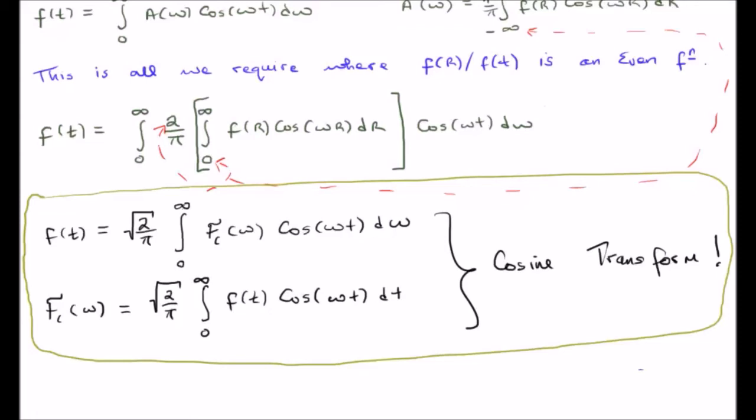It's also important to note what I've done with the scaling term, the two over pi. Because we're dealing with a Fourier transform pair, I can put this scaling term anywhere I want or even anything that gives me the ratio which would give me that scaling term. So I could put the entire two over pi on the forward transform, the reverse transform or I could split it up. Here I have split it up.